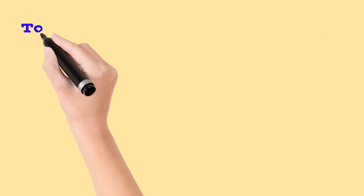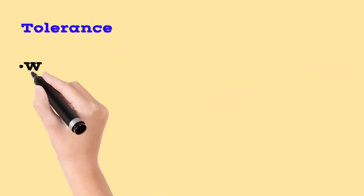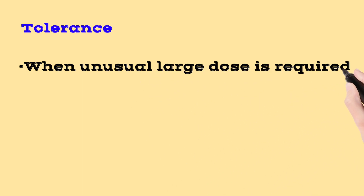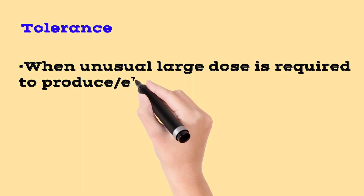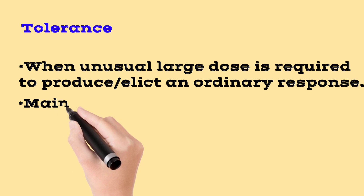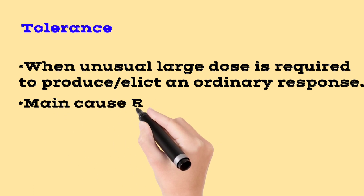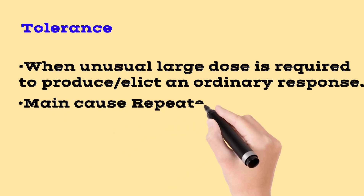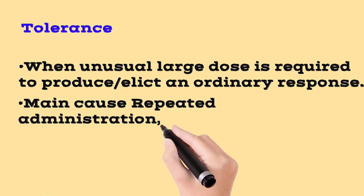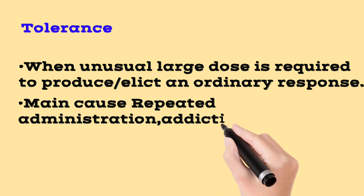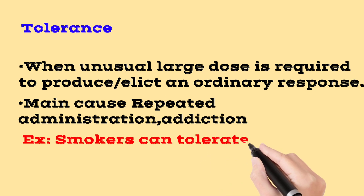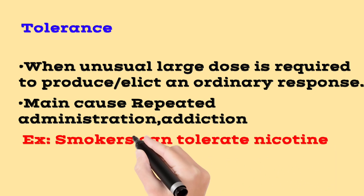Next is tolerance. Tolerance is when an unusually large dose is required to elicit the ordinary effect of a drug. If a drug is used repeatedly or long-term, tolerance develops and increases. For example, smokers can tolerate nicotine — with regular use, an increased dose is needed to produce the same effect.